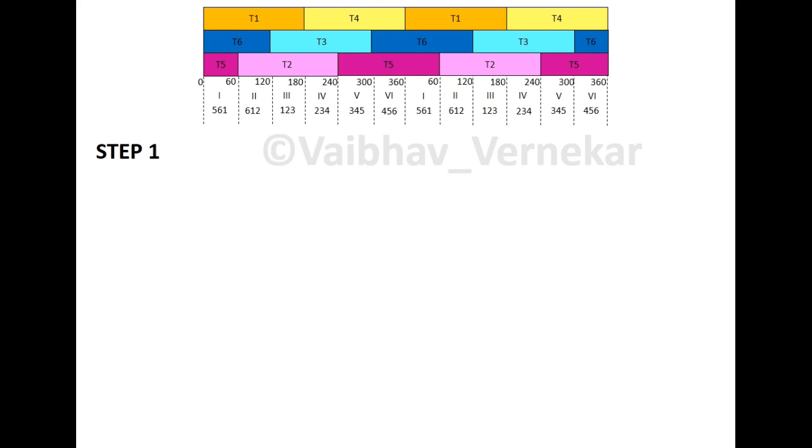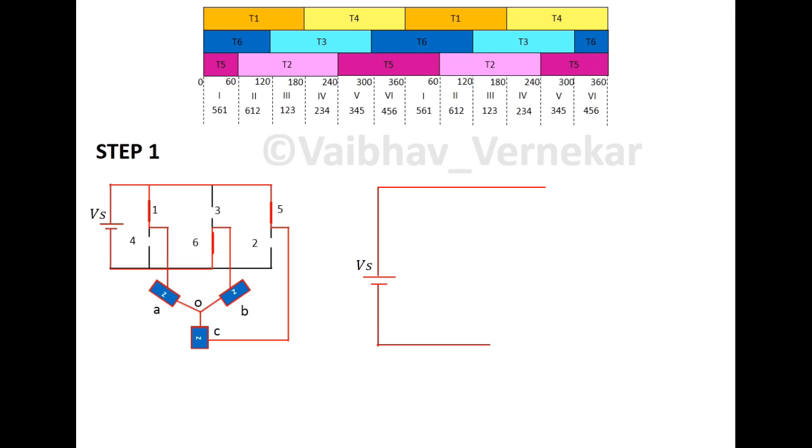We shall now see how the circuit responds to step 1. In step 1 thyristors 5, 6, 1 are conducting. So close those 3 switches. Now draw an equivalent circuit. The DC supply has a positive terminal and a negative terminal. It is seen that terminal A and C are connected to the positive bus while terminal B is connected to the negative bus. There is a terminal O in common. Each load has an impedance Z.